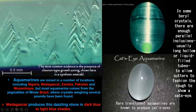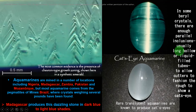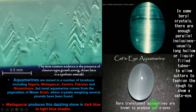Look at the cat's eye aquamarine. This cat's eye is also rare. Because of the parallel lines, it creates this cat's eye effect. In some beryl crystals, there are enough parallel inclusions — usually long hollow or liquid-filled tubes — to allow cutters to fashion the rough to show a cat's eye. Rare translucent aquamarines are known to produce cat's eyes.